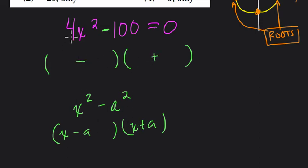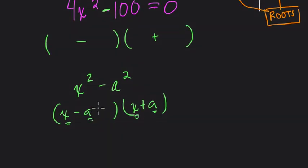The first term in the factored form is the square root of the first term in the unfactored form. And the second term in the factored form is the square root of the second term in the unfactored form.